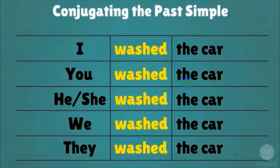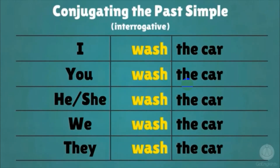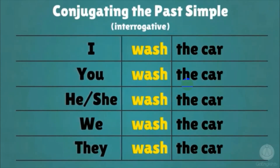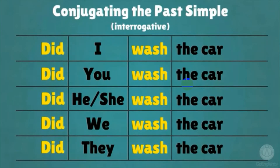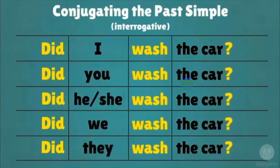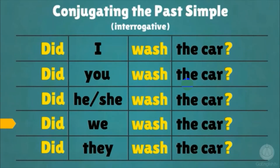Conjugating the past simple interrogative: Did I wash the car? Did you wash the car? Did he wash the car? Did she wash the car? Did we wash the car? Did they wash the car?